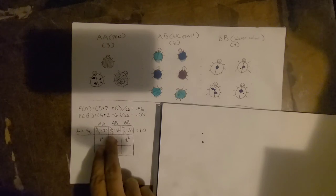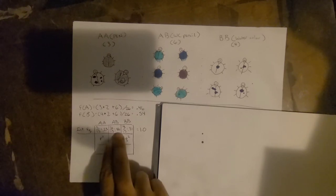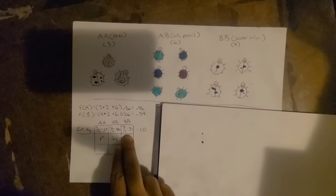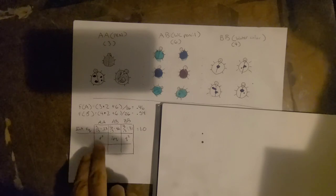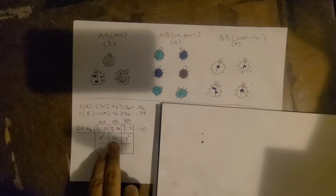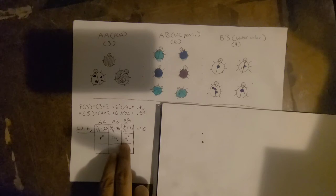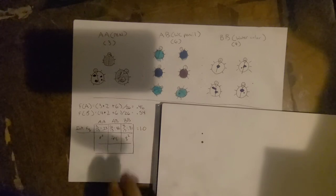The population of big A big B, 6 divided by 13, 0.46, and then here 4 divided by 13, 0.31. And it'll follow the equation where p squared plus 2pq plus q squared will equal 1, nice and even.